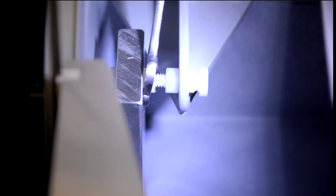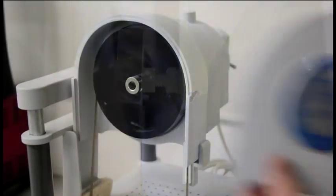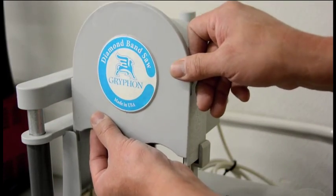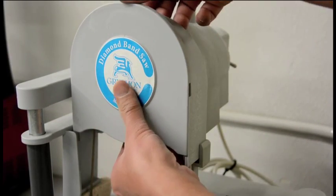When the adjustment is complete, tighten the lock nut. Now we're ready to install the top cover and get on with using the saw.